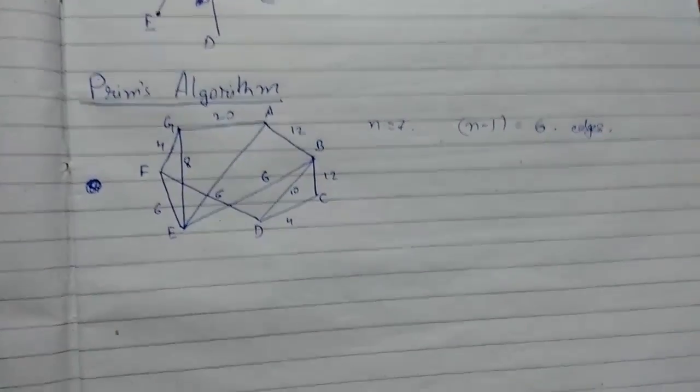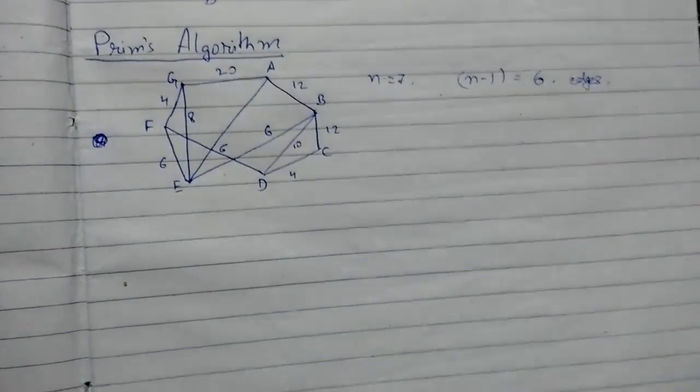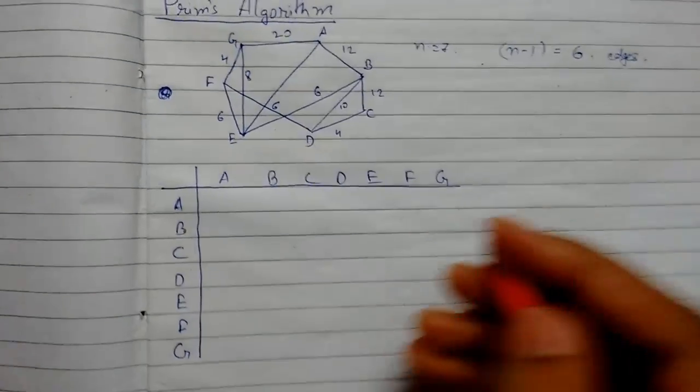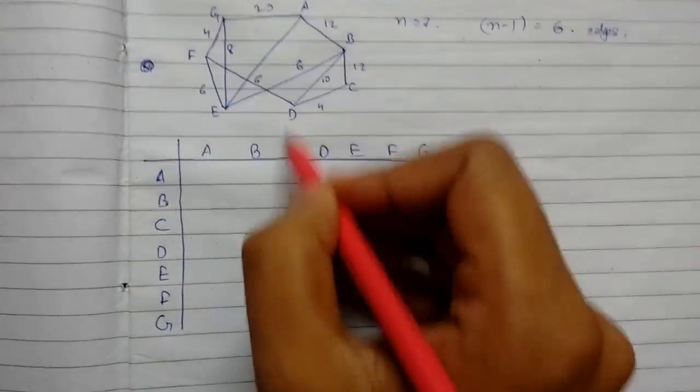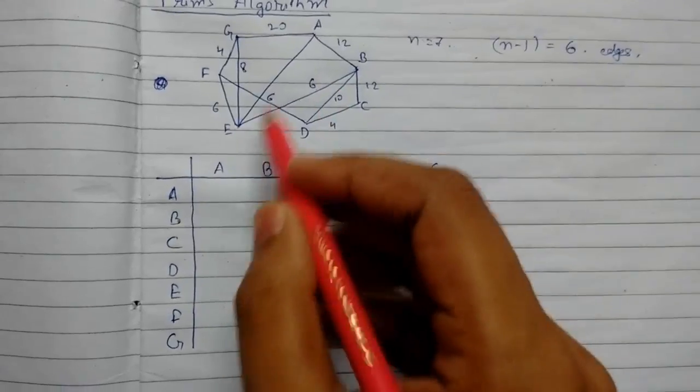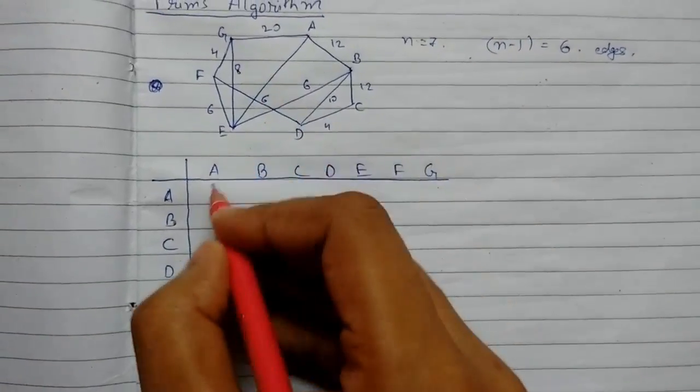So now we'll make a spanning tree. First we need to make a table, so now we have made this table. Now we will just plot the numbers connecting. For A to A will be zero, so all this will be zero because E to E, F to F, all are zero.